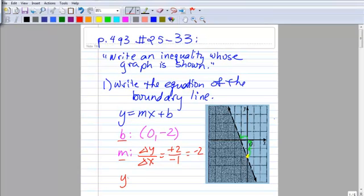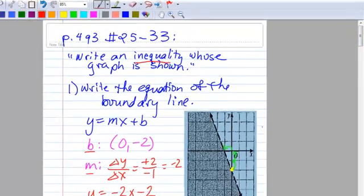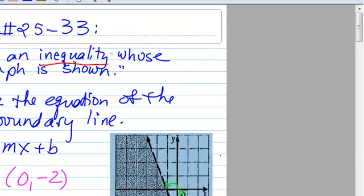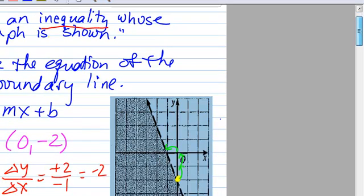So we can go ahead and write the equation of the boundary line. Y is equal to negative 2x, that's our slope, minus 2 is our y-intercept. Good, that's our boundary line. Rock on. Except that's not what the question asked us to do. Our question asked us to write an inequality whose graph is shown. So we're going to have to do a little bit more work.